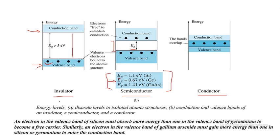In summary, an electron in the valence band of silicon must absorb more energy (1.1 eV) than one in germanium (0.67 eV) to become a free carrier. An electron in the valence band of gallium arsenide must gain even more energy (1.41 eV) than silicon or germanium to enter the conduction band. Therefore, gallium arsenide devices are more temperature stable compared to germanium and silicon.